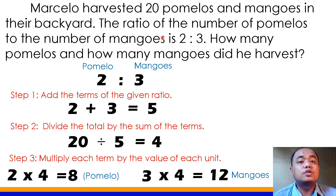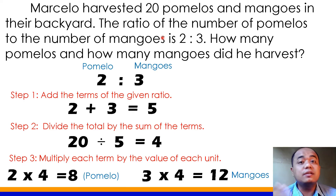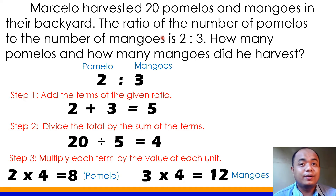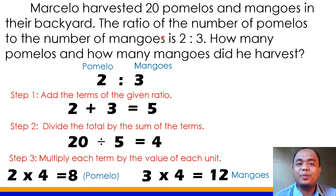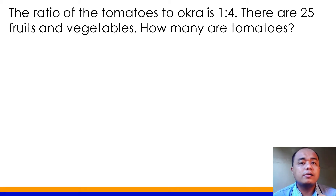For you to solve it correctly, take note of the steps on how to solve this kind of problem involving partitive proportion. Let's have another example para mas klaro how to solve problems involving partitive proportion. The ratio of tomatoes to okra is 1 is to 4. There are 25 fruits and vegetables. How many are tomatoes?